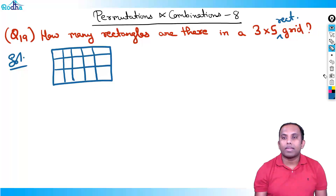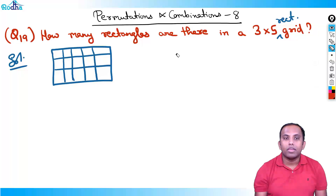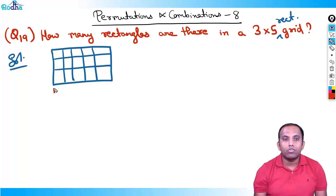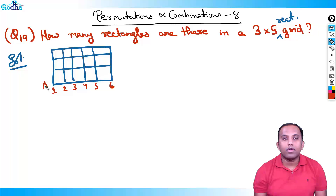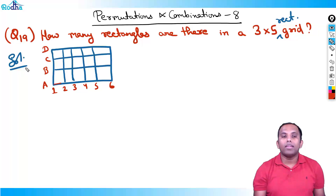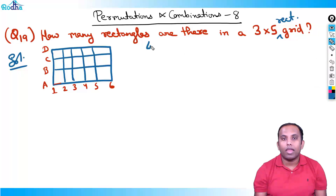So in this grid, how many rectangles are there? Get the concept right. In a 3×5 grid, there are 6 vertical lines and 4 horizontal lines — label them A, B, C, D. There are 4 horizontal lines and 6 vertical lines.